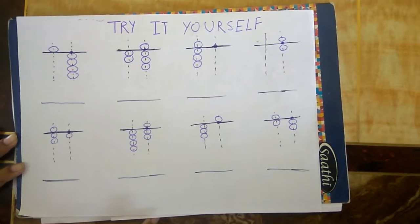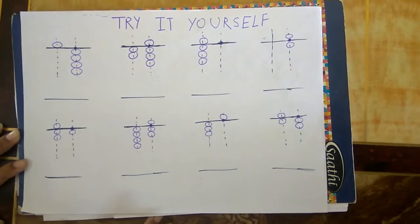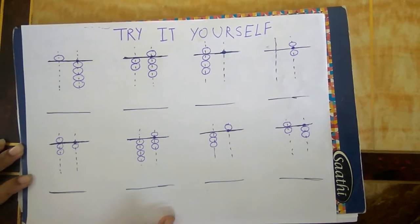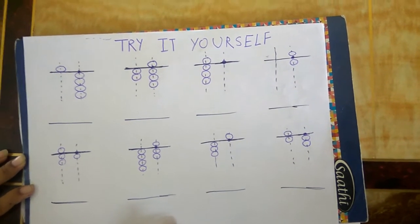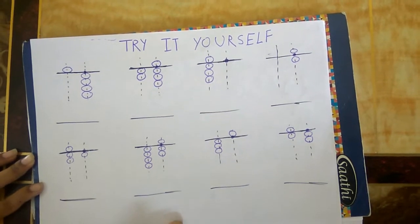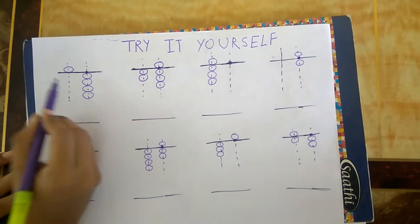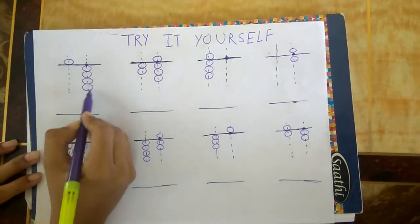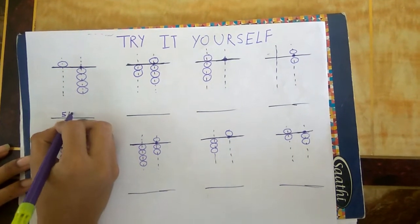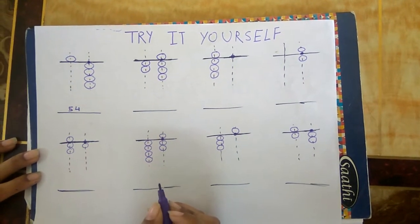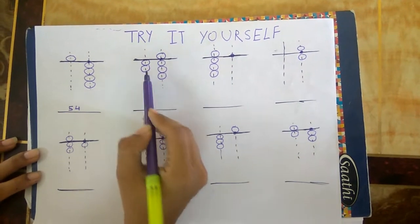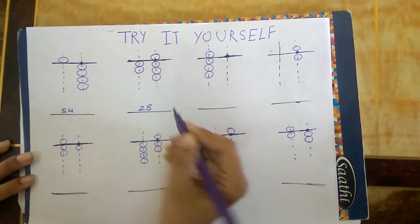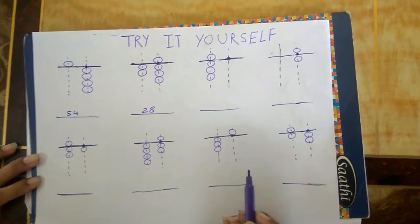Hello friends, today we will try to do some exercises on the representation of numbers on an abacus. Our first number is 5 and 4, so it is 54. Next, 2 and 8, so this is 28.